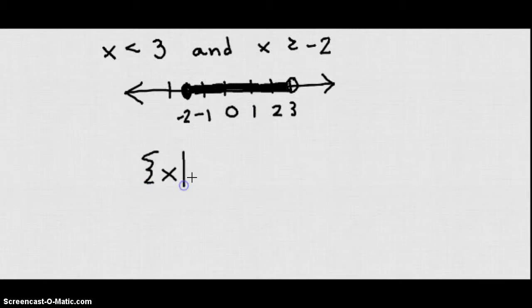Solution set written as x such that negative 2 is less than or equal to x, which is also less than 3. Notice we write it like this because x is in between negative 2 and 3. It does not include 3.